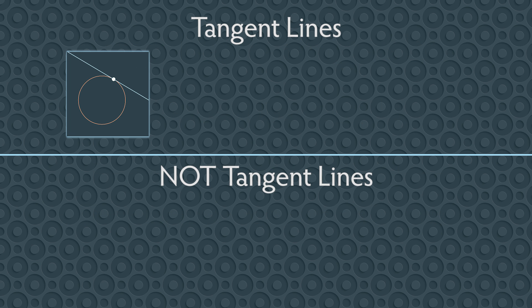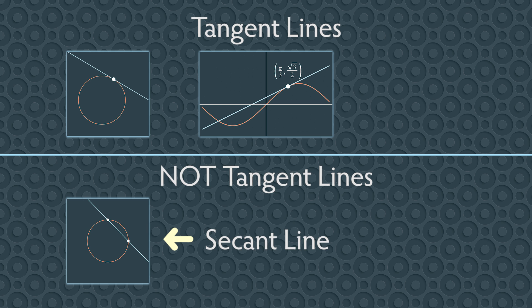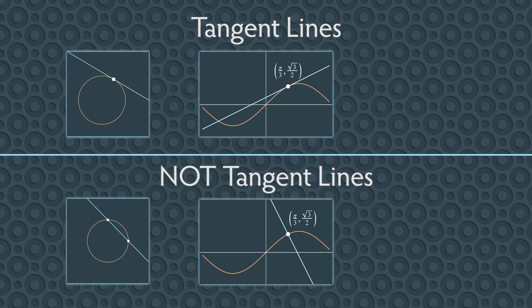Here, we have a line that touches a circle at only one point — this is a tangent line. And here, we have a line that crosses a circle at two points — this is not a tangent line; we call this a secant line. And here is a line that touches the sine curve at the point (π/3, √3/2) — this is a tangent line. This line also goes through the point (π/3, √3/2), but it's not a tangent line.